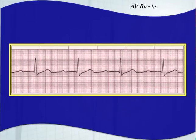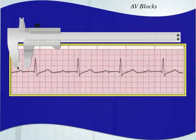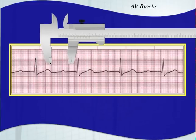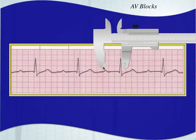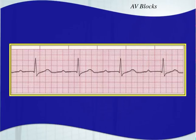Looking at the next one: is our PR interval a constant length? Looking at the strip, it appears pretty consistent. Do we have dropped beats? I don't see any dropped beats and I'm not going to assume there are any since the PR interval is staying consistent. So this would be a sinus bradycardia with a first degree AV block — and that is a very prolonged PR interval.